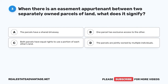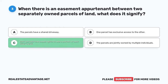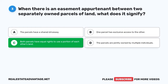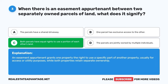Question 3. When there is an easement appurtenant between two separately owned parcels of land, what does it signify? A. The parcels have a shared driveway. B. One parcel has exclusive access to the other. C. Both parcels have equal rights to use a portion of each other's land. D. The parcels are jointly owned by multiple individuals. The correct answer is C: Both parcels have equal rights to use a portion of each other's land. An easement appurtenant grants one property the right to use a specific part of another property, usually for access or utility purposes, while both properties retain separate ownership.